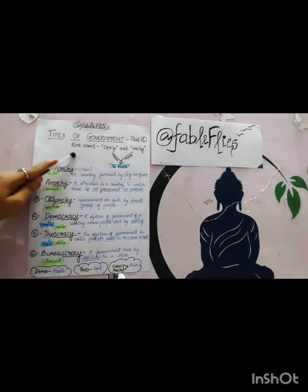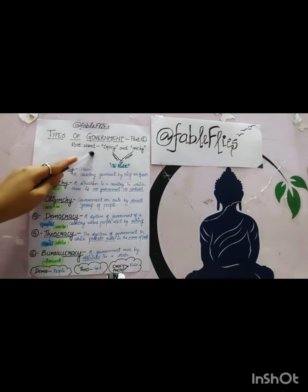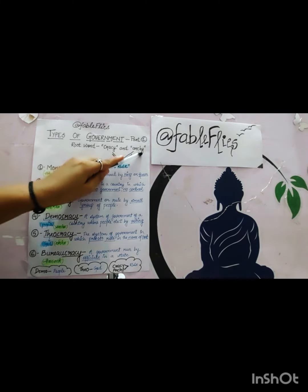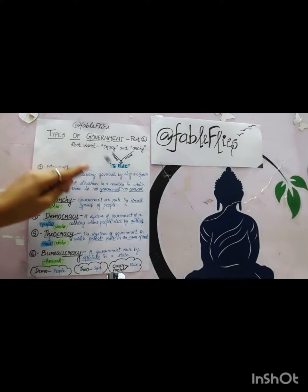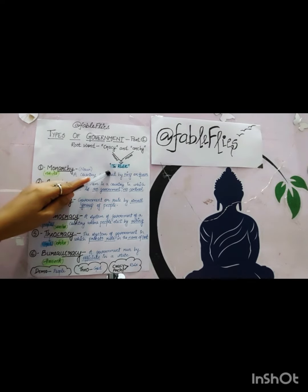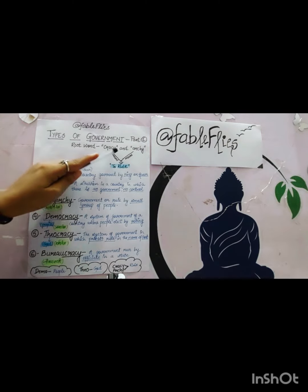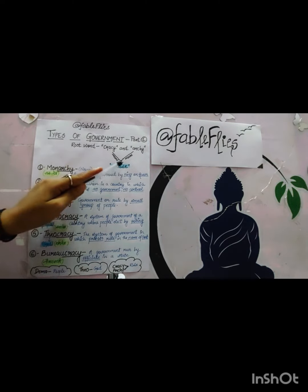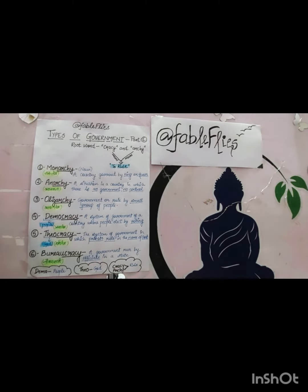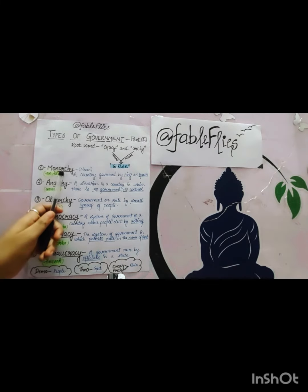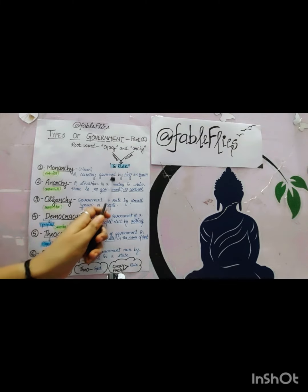Here the root word is 'cracy' and 'archy', which means to rule or power. So the root words 'cracy' and 'archy' mean rule. Now let's begin with the types of government. 'Archy' means rule, and monarchy means a country governed by a king or a queen.